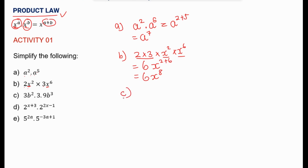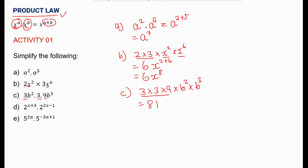Part c is almost the same as b — we have coefficients. So you can say 3 times 3 times 9, or 3 squared is 9. Then times b to the power 2 times b to the power 3. So 3 times 3 times 9 is 81, giving us 81, and then b to the power 2 times b to the power 3 is b to the power 2 plus 3. So it's 81b to the power 5.